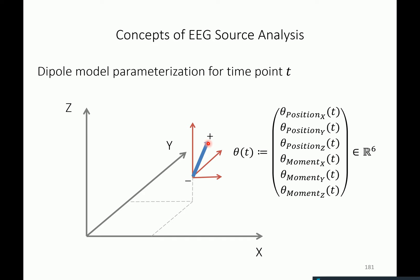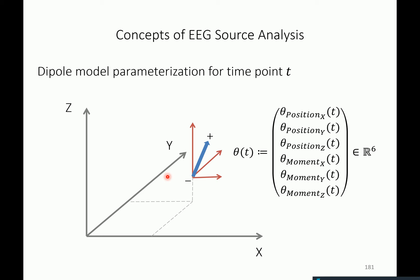Three numbers describe the moment of the dipole, which specifies its spatial orientation — because at a given point in space you can have a dipole pointing different ways. The dipole can be strong in the sense that it's a long arrow, or can be short, so you need three numbers to specify the moment. This dipole model, and the fact that if you have multiple dipoles their activities sum, is behind all of EEG source localization.